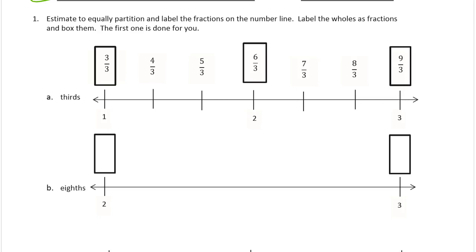So the wholes: 3 thirds, that's one whole. And 6 thirds is 3 thirds twice — that's 2, that's whole number 2. And then 3 thirds 3 times is 9 thirds — that's 3. You see the whole numbers here. So we're labeling the wholes as fractions: 3 thirds, 6 thirds, and 9 thirds. And we're boxing the ones that are whole numbers.